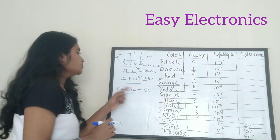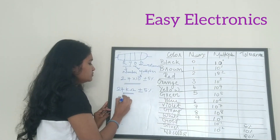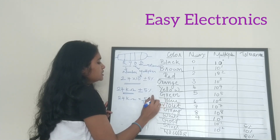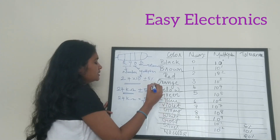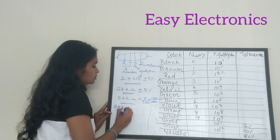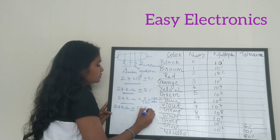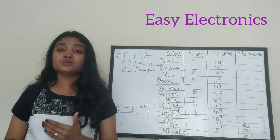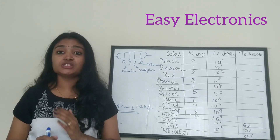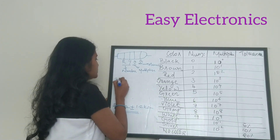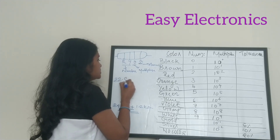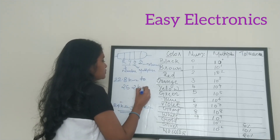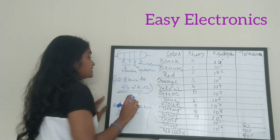To find the 5% tolerance range: 5% of 24 kΩ = 24 × 5/100 = 1.2 kΩ. So the resistor value is 24 kΩ ±1.2 kΩ. That means the resistor ranges from 22.8 kΩ to 25.2 kΩ. This is the exact range of your resistor value.